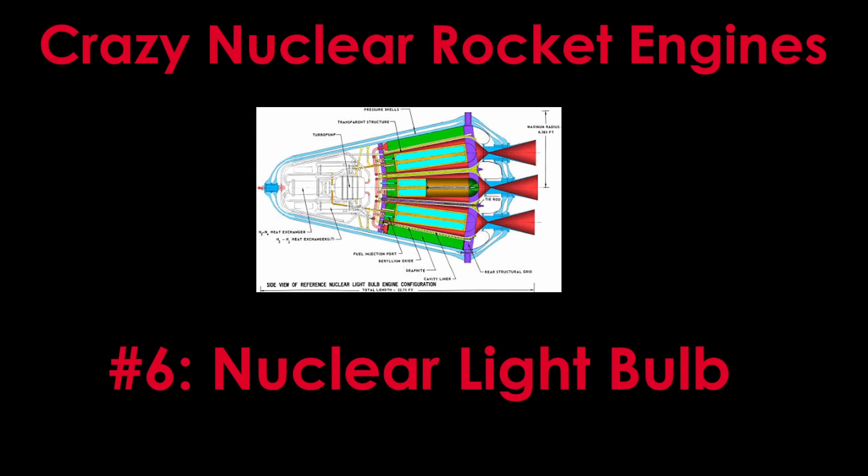This is episode 6 of the series on crazy nuclear rocket engines, where we will examine the nuclear light bulb, otherwise known as the gaseous core closed cycle engine.